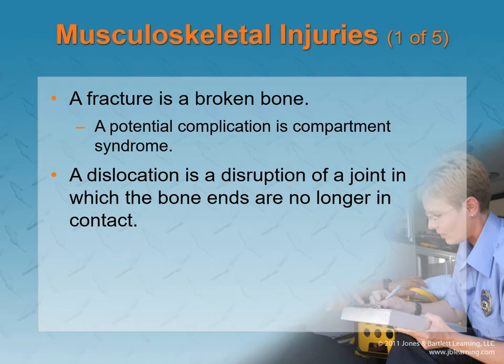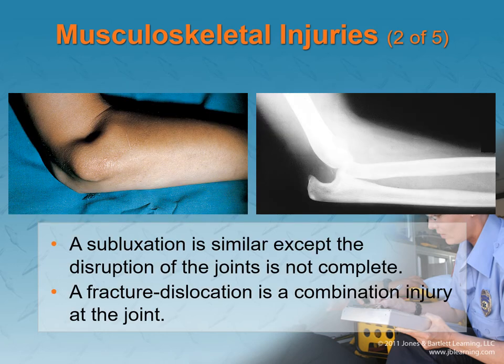Keeping it simple, a fracture is a broken bone. There is a complication of compartment syndrome, and we'll talk about that in a little bit. A subluxation is kind of like halfway out. What usually happens is it will fully dislocate, and then right around the time of the injury, the body will almost fix it and try to relocate, but it doesn't make it all the way in.